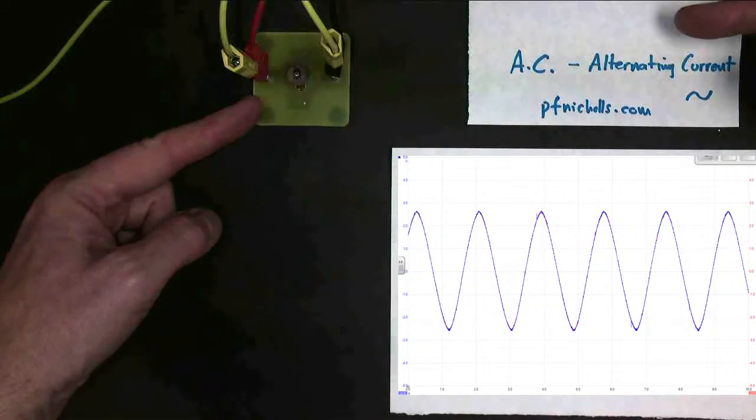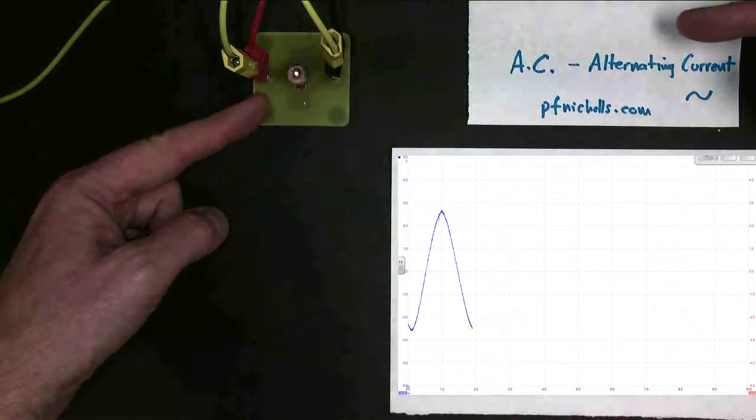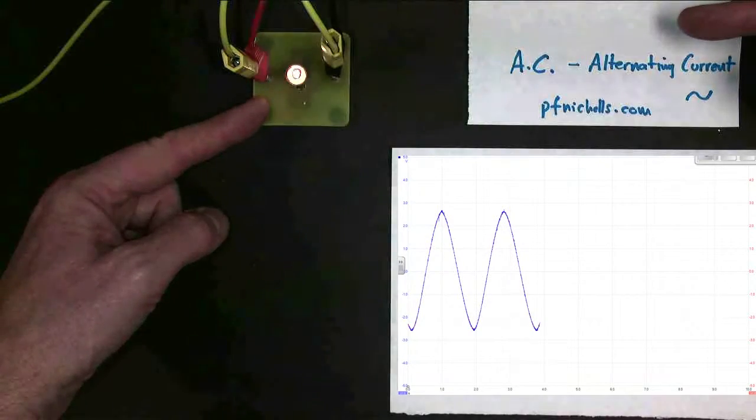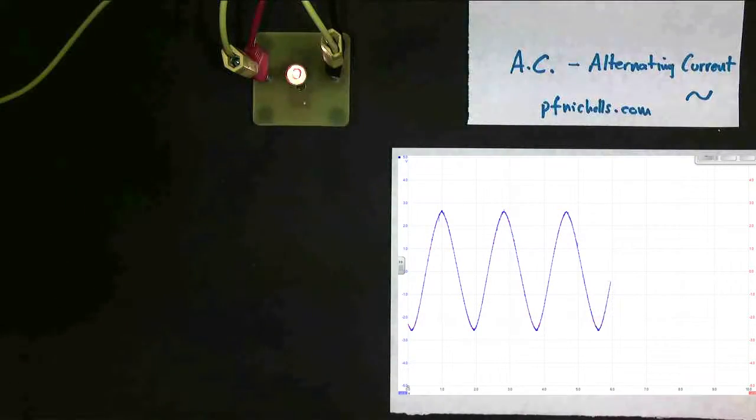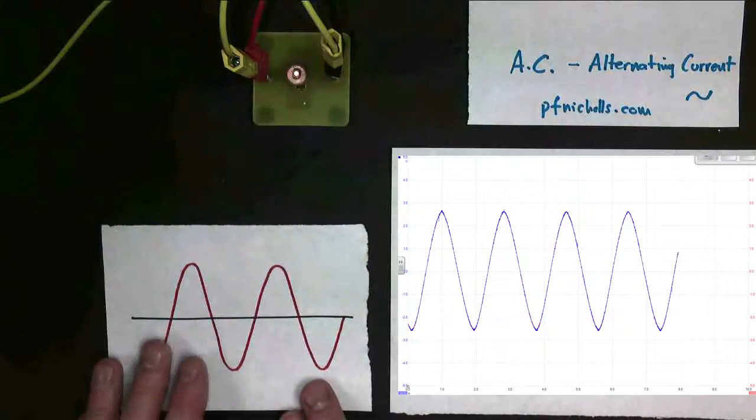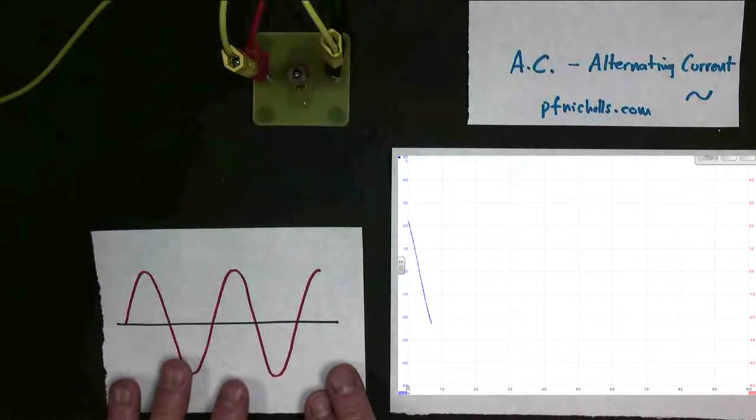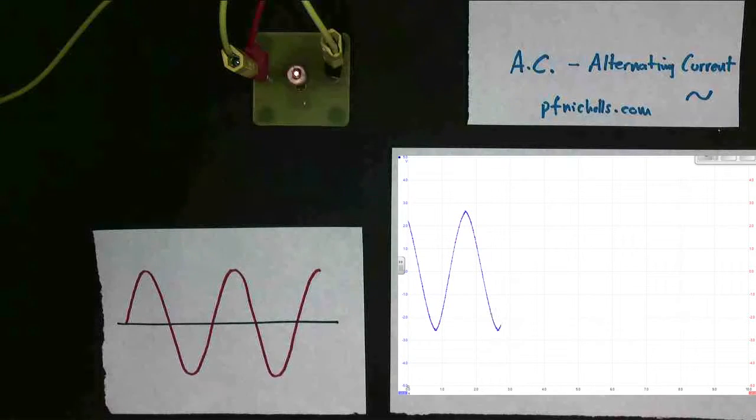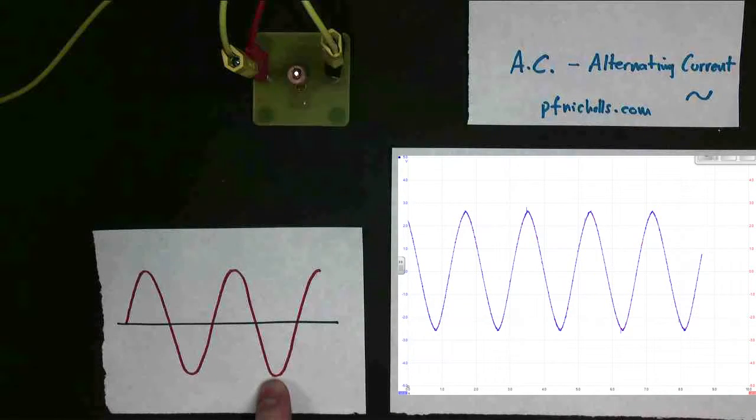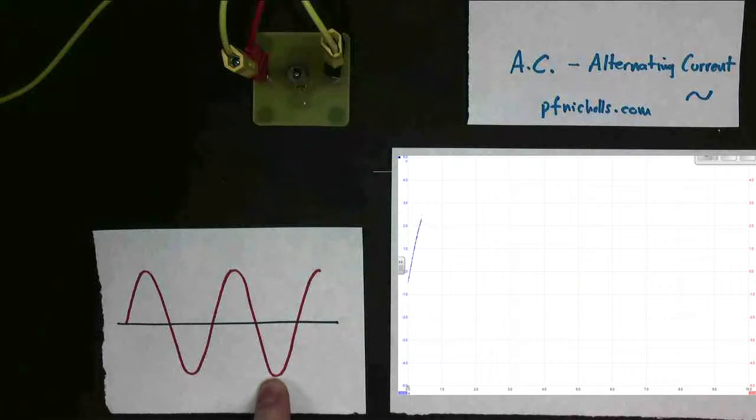The bulb is being driven off alternating current, so it's coming on and off repeatedly as the current changes direction. I drew that out on a piece of paper, and you can see it on our oscilloscope screen. On the oscilloscope screen, the blue line represents the power supply voltage, and the red line represents the voltage across the bulb. They're identical.